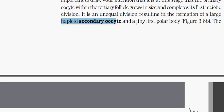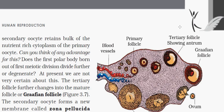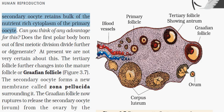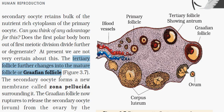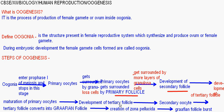As the secondary oocyte develops, it gets surrounded by further layers. The tertiary follicle gets converted to Graafian follicle. The secondary oocyte is further surrounded by a membrane called zona pellucida. After that, the Graafian follicle ruptures and releases the secondary oocyte or ovum from the ovary. This process is called ovulation.